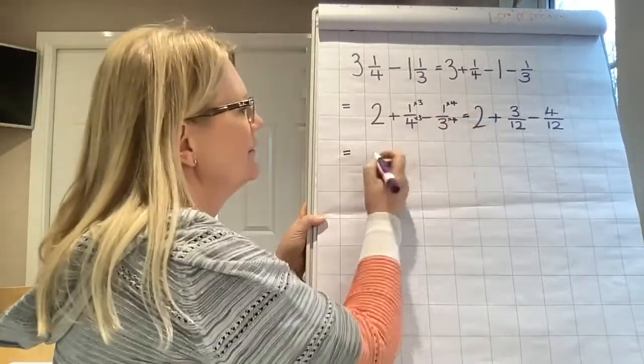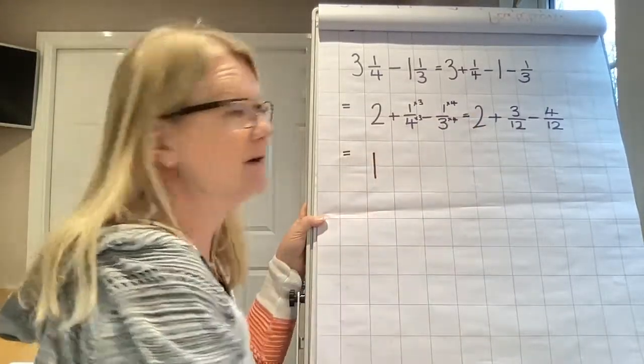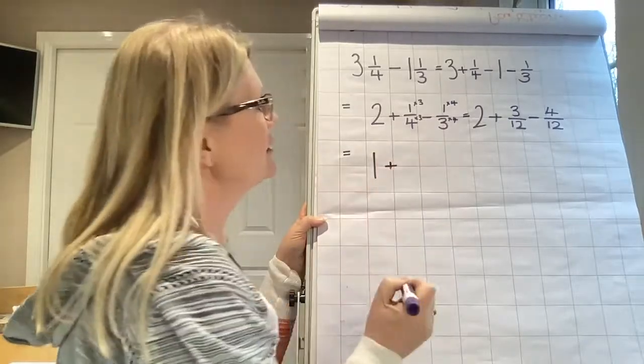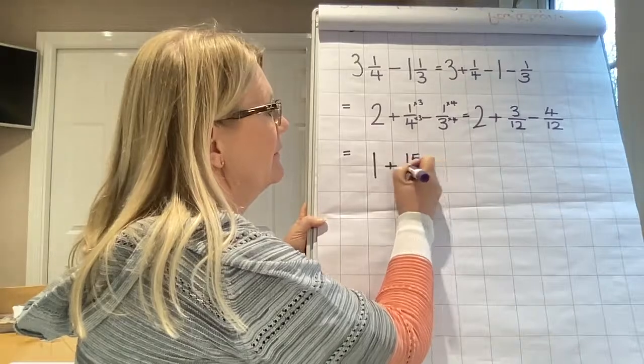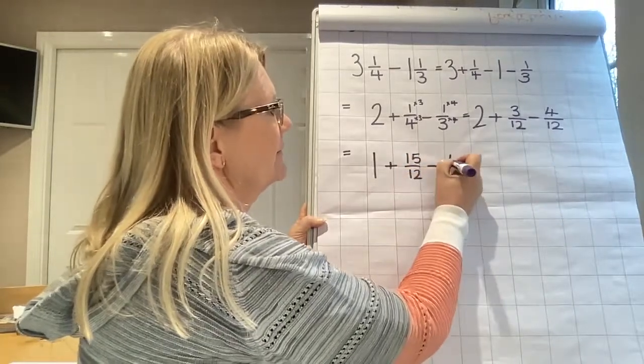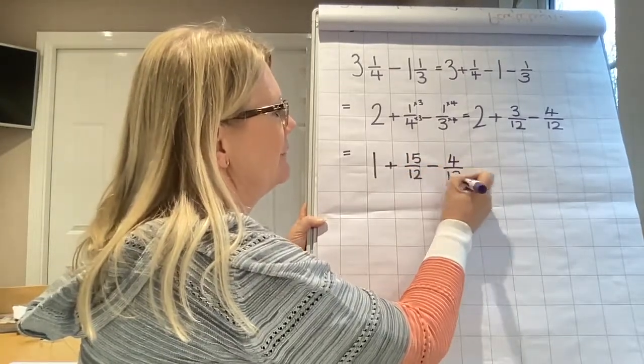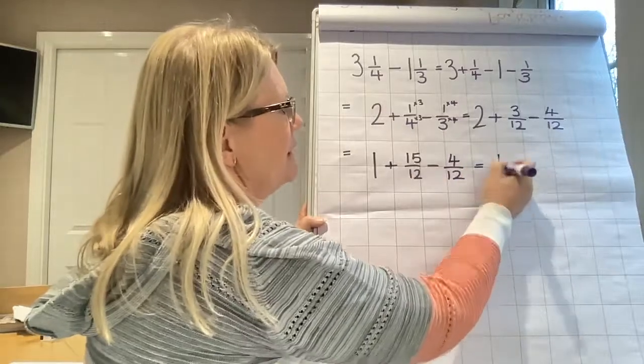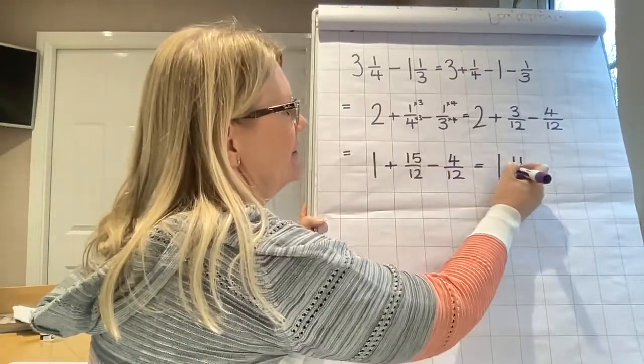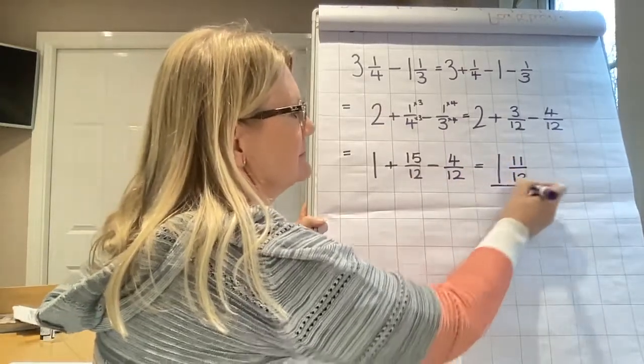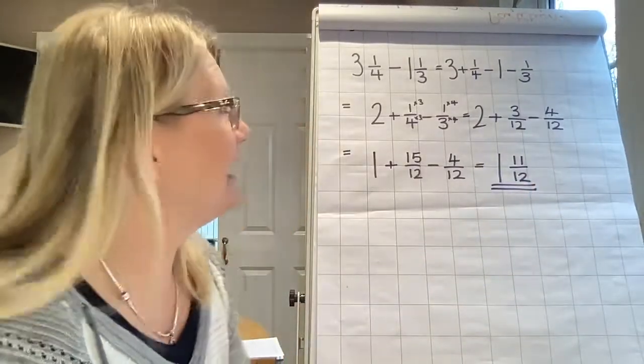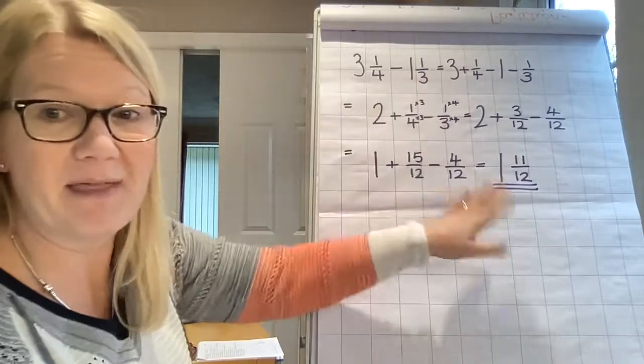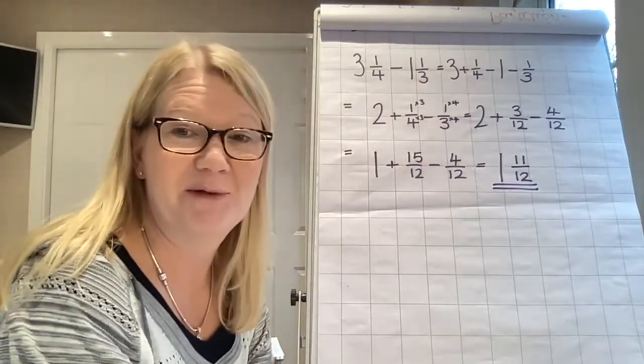So I'm going to leave one as a whole. I'm going to exchange the other one for twelve twelfths, which will give me fifteen twelfths. I need to take away four of them. So my answer will be one and eleven twelfths. So I could get another week's worth out of there as well, but I think I need to go to home bargains and buy some more.